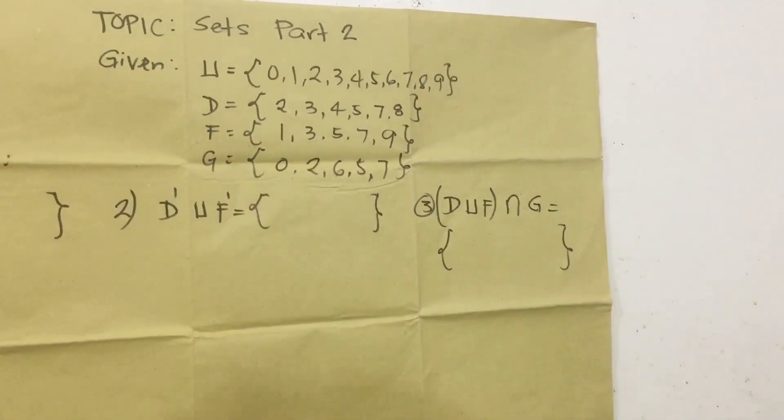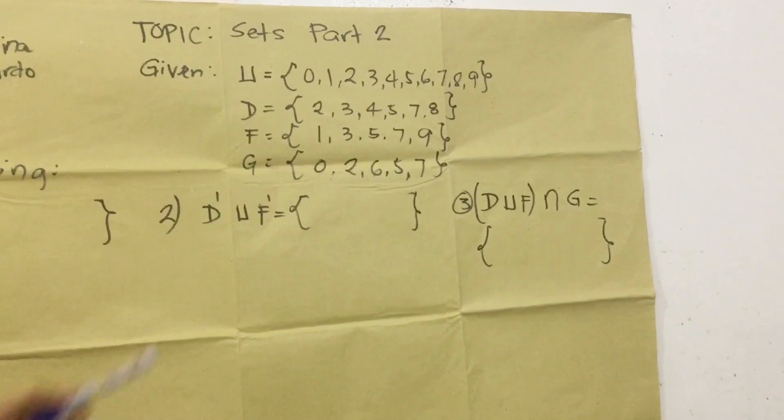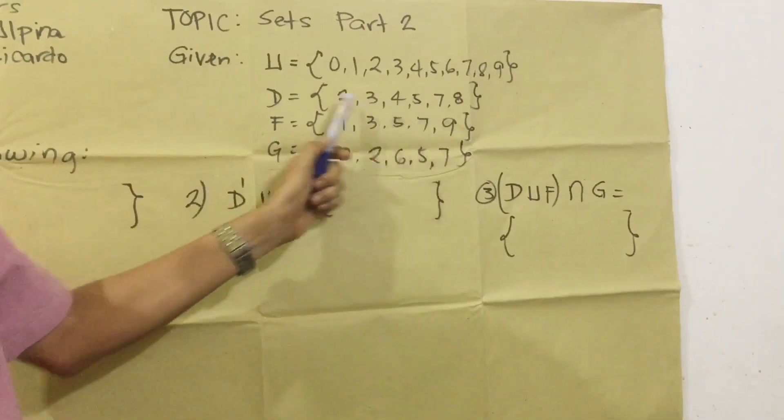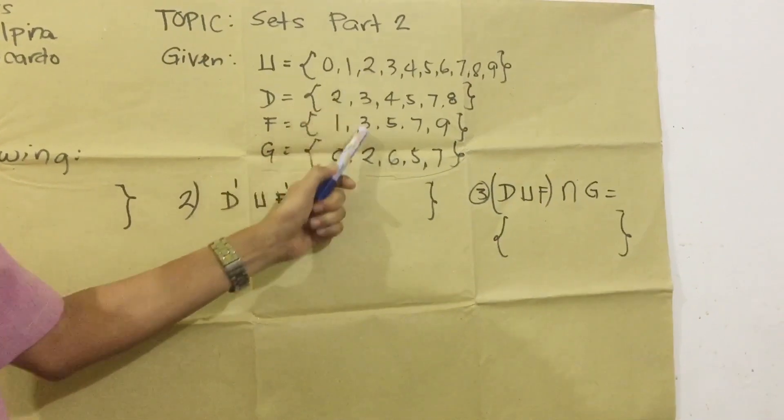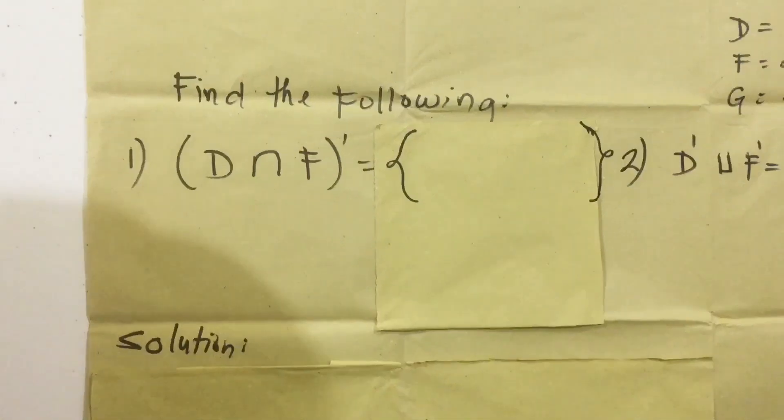Ang tawag dito ay Sets of Whole Numbers because nagsisimula sa 0. Kapag may 0, isa whole number. T, F, G ang tawag dito sa kanila, kasi galing dito sa universal, lahat na ito ay tawag sa kanila yung mga subsets.